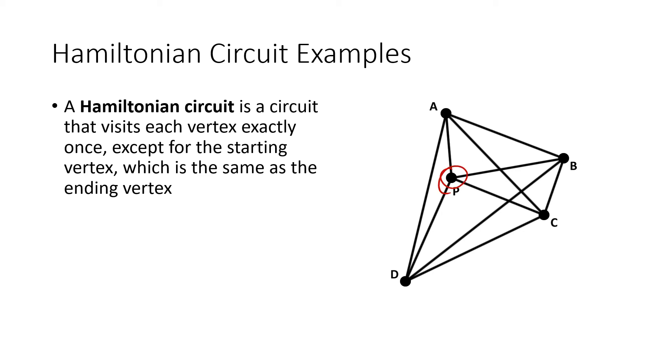There's lots of ways to start at P, and maybe I could go to D, then over to C, and then up to A, and then over to B, and then back to P. That's a different example than the one that we saw before. So how do we know which one we want? We want to try to find the best circuit.